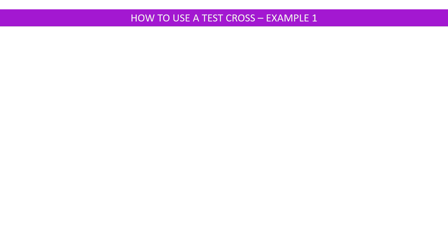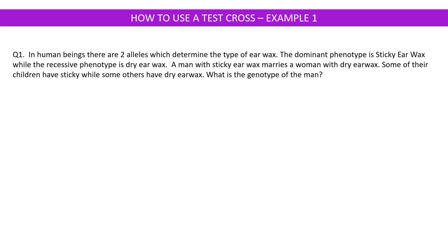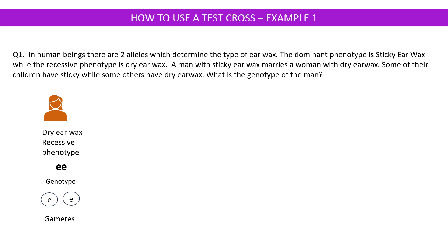Let's take a few examples and solve them. Example one: in human beings, there are two alleles which determine the type of earwax. The dominant allele has a phenotype of sticky earwax while the recessive allele gives dry earwax. A man with sticky earwax marries a woman with dry earwax. Some of the children have sticky while some have dry earwax. What is the genotype of the man? Let's start by deciding our alleles. The dry earwax recessive phenotype, which the woman displays — let's call those alleles small e — so her genotype would be small e small e, and her gametes will be small e small e type.